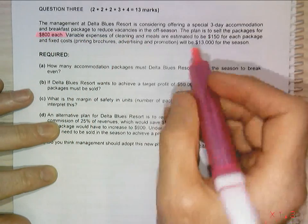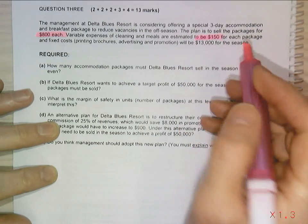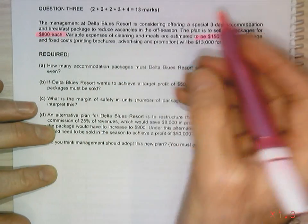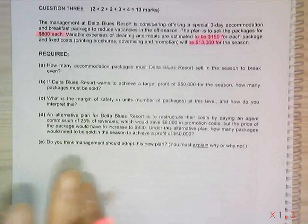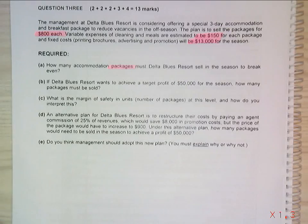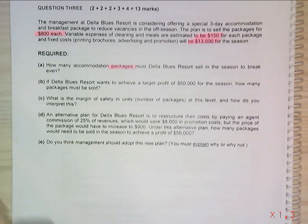Variable expenses of cleaning and meals are estimated to be $150 for each package. And the fixed costs, which is printing brochures, advertising and promotions, will be $13,000. So how many packages must Delta Blue sell in a season to break even?